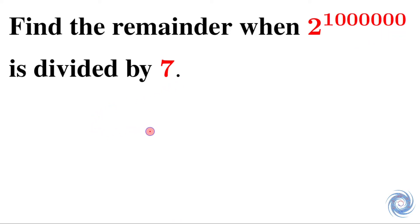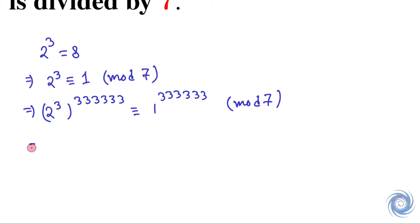We will calculate the remainder using two different methods. In the first method, we use modular arithmetic. We know that 2³ equals 8, which implies 2³ is congruent to 1 mod 7. Therefore, (2³)³³³³³³ is congruent to 1³³³³³³ mod 7.